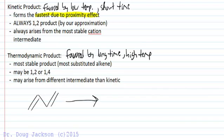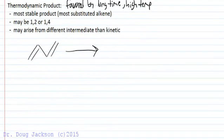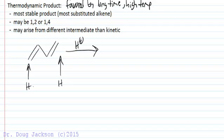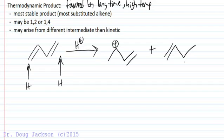Let's look at butadiene, the classic example. We're going to treat this with an acid, and anytime you react the diene, you're going to add the hydrogens to the outside positions and the cation to the inside, because we want to form allylic cations. We have two possibilities, and it turns out these are exactly the same, so we'll only have to consider one of them.